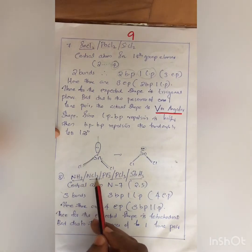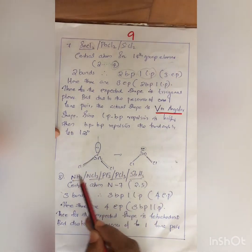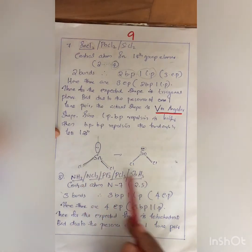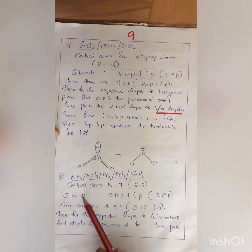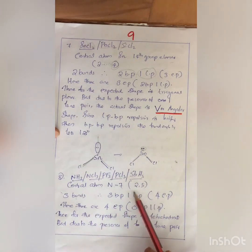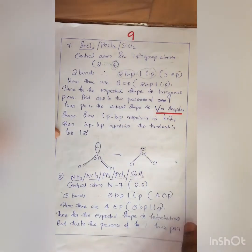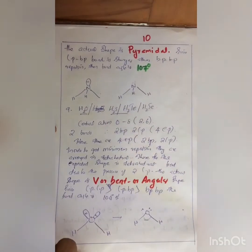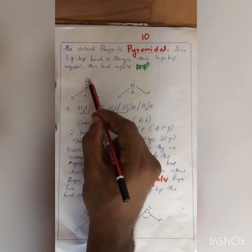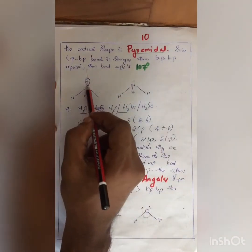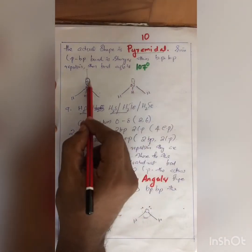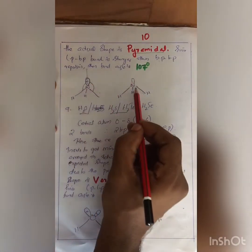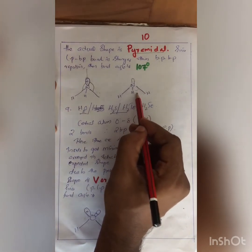For NH3, NCl3, PF3, PCl3, and SbH3 — all 15th group elements with 5 electrons in the outer shell — the central atom is nitrogen, atomic number 7, configuration 2,5. There are 3 bonds: 3 BP, with 2 remaining electrons forming 1 lone pair, giving 4 EP total. The expected shape is tetrahedral, but due to the presence of one lone pair, the actual shape is pyramidal. Since LP–BP repulsion compresses the bond angle below 109 degrees, the bond angle is 107 degrees.